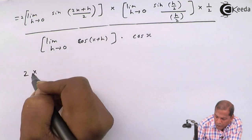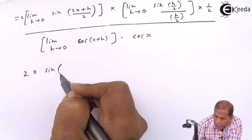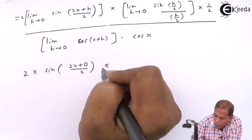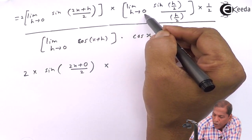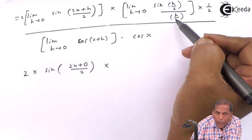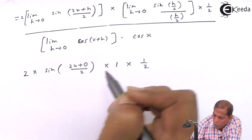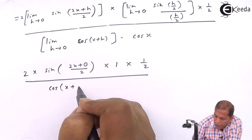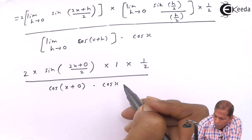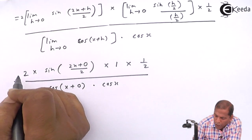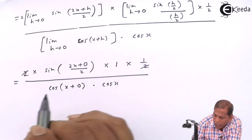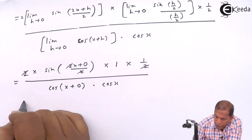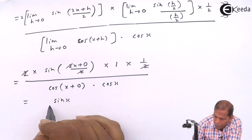Now 2 we write as it is. Into sin in bracket: whenever we put h = 0 we have (2x + 0) upon 2. Into the limit h tends to 0 of sin(h/2) upon (h/2), so that gives 1. Into 1/2. The whole thing divided by cos(x + 0) into cos(x). Now here we cancel 2 from numerator and denominator. Also inside the bracket we cancel 2 from numerator and denominator, so in the numerator we are left with sin(x).